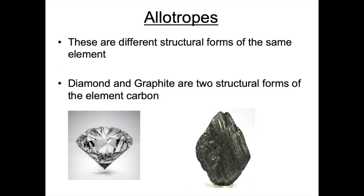Allotropes are different structural forms of the same element. Diamond and graphite are two structural forms of the element carbon. During this video we'll be discussing the different structures and bonding in diamond and graphite as well as looking at their properties and their uses.